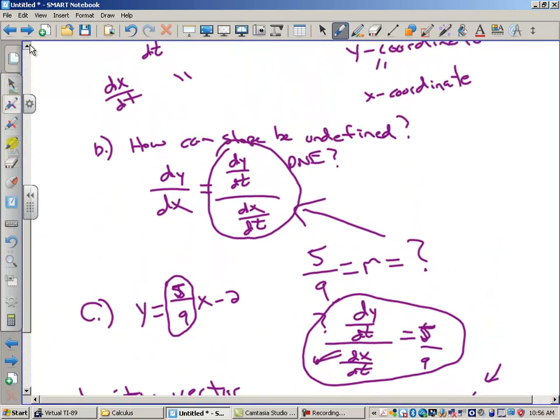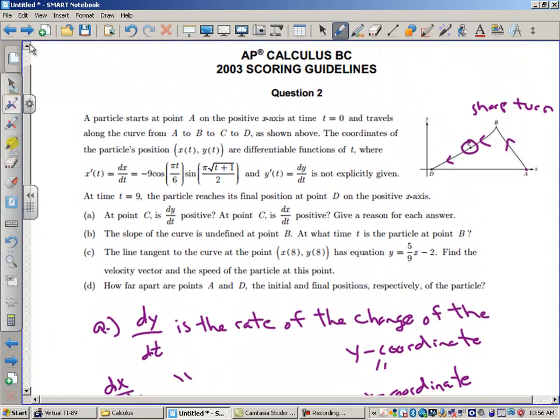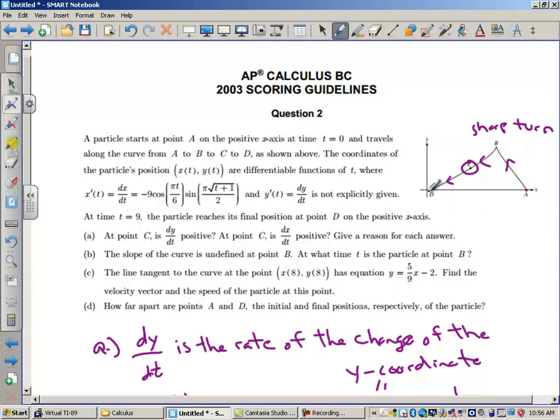Now part D asks us to find how far apart are points A and D, the initial and final positions, respectively of the particle. A and D are on the x-axis. So we want to figure out how far apart they are. So I want to find the difference in this x-coordinate. How can you, talking about D here, what can you do to the derivative of x to figure out the change in x from A to D? And how long did this take? Well, this took, it told us up here, it took 9 seconds. So how can you find the x-coordinate at 9 minus the x-coordinate at 0? What will give you this if you have x prime? What can you put right here to give you this notation?